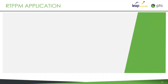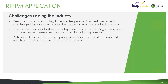The RTPPM application addresses the challenges around maximizing your production performance. The big issue is the hidden factory — assets that are underperforming, poor processes, maybe excessive waste — but you can't capture that information. We've seen this with our customers: the first thing they want to do is understand what's actually happening on the shop floor, because we really don't have a good idea of that. We know we have capacity but we're not meeting our production demands.